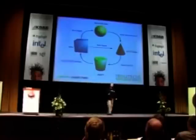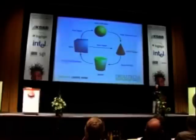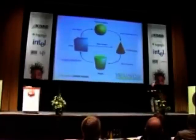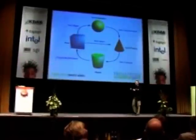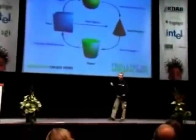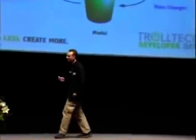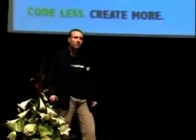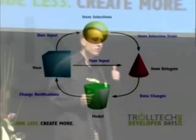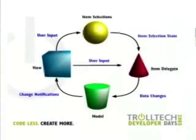We also have another part: the top part, the yellow sphere — that's the selections. We have separated the selection state of items into a separate part that you can share between views. The last part is the red cone, the item delegate. This comes closest to the controller in MVC. It is responsible for drawing and editing single items in the views, all on a per-item basis.